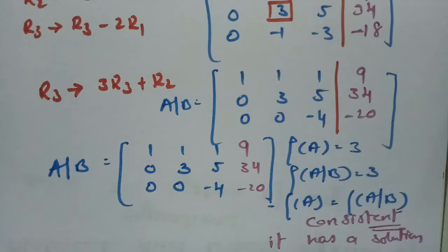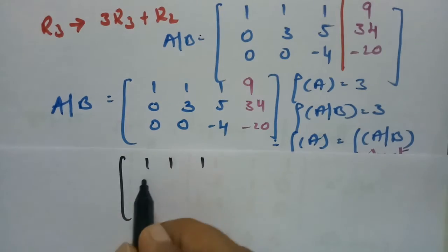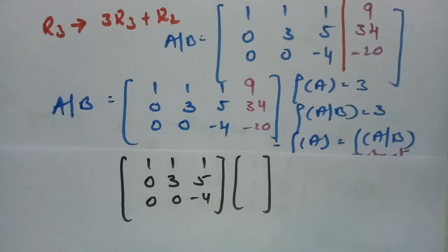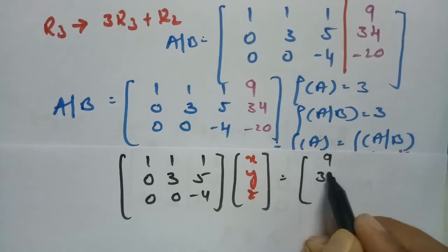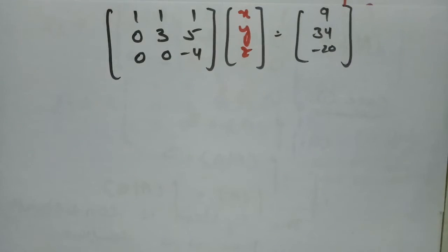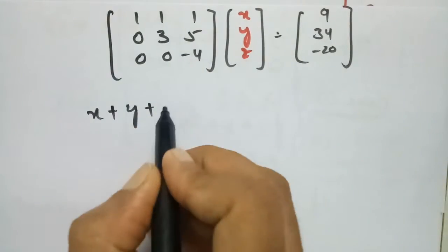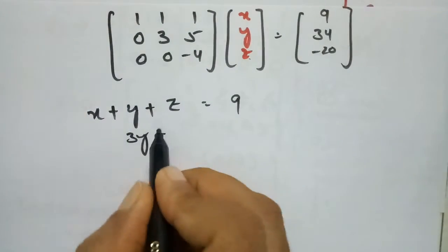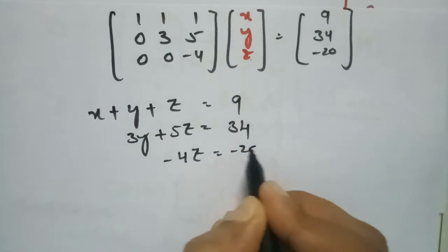To find the solution, we write the reduced system as three equations: equation 1 is x plus y plus z equals 9; equation 2 is 3y plus 5z equals 34; equation 3 is minus 4z equals minus 20. From equation 3, z equals minus 20 divided by minus 4, so z equals 5.